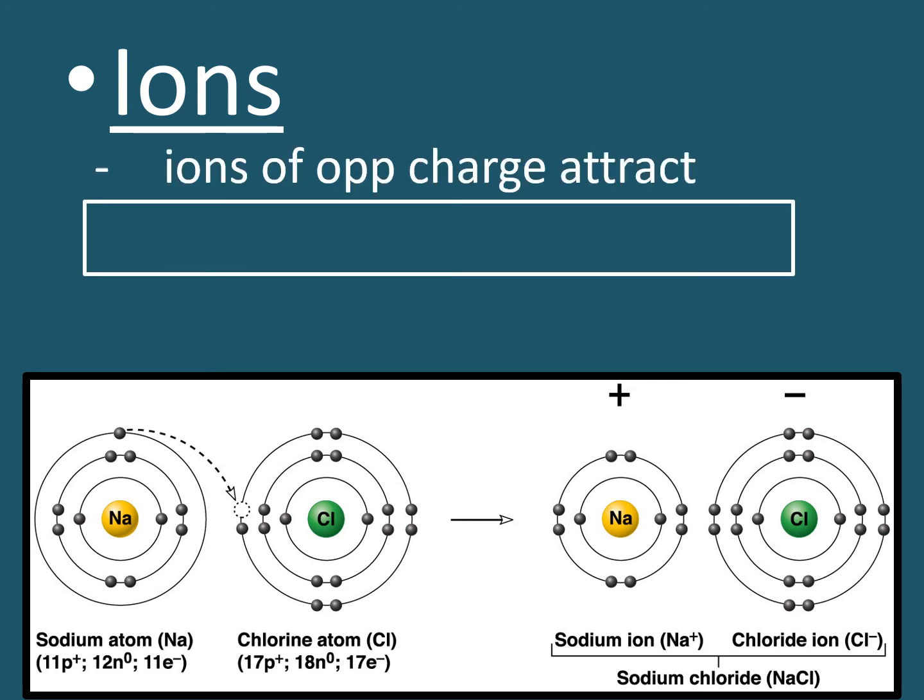Ions of opposite charge are attracted to each other. Positive ions are attracted to negative ions. So in the diagram below sodium ions are positive. They are attracted to the negative chloride ions and they stick together giving you sodium chloride which we commonly call table salt. A tip for remembering that cations are the ion with a positive charge is that cation has the letter t in it and the letter t looks like a plus sign.